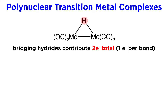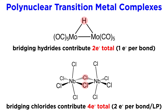So a bridging hydrogen will still contribute only two electrons, as we would expect from hydride. While it may seem absurd to see two bonds coming from a hydrogen atom, those two bonds actually contribute a total of only two electrons, which are distributed among two metal centers. The exception is ligands with two or more lone pairs, like chlorine, which can actually donate one lone pair to each metal, thereby contributing four electrons instead of the typical two.